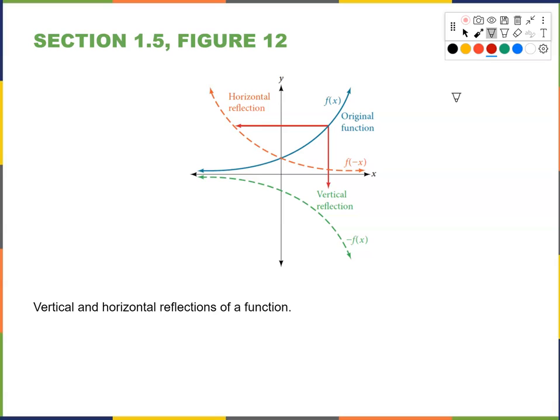Vertical and horizontal reflections of a function. The original function f of x is shown in blue. The red graph is a horizontal reflection — a flip about the y-axis. The green graph is a vertical reflection — a reflection about the x-axis.